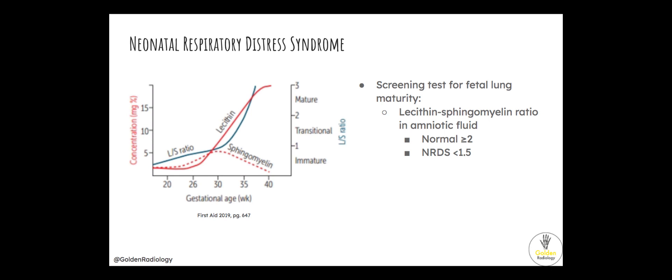One thing you may get tested on is screening for fetal lung maturity. We do that with the lecithin-sphingomyelin ratio in the amniotic fluid. A normal ratio is equal to or greater than 2, and a ratio less than 1.5 makes you think NRDS. Sphingomyelin levels in amniotic fluid stay more or less constant throughout pregnancy. Lecithin is a major component of surfactant, so as surfactant is produced and lungs mature, lecithin in the amniotic fluid goes up, and the ratio increases.